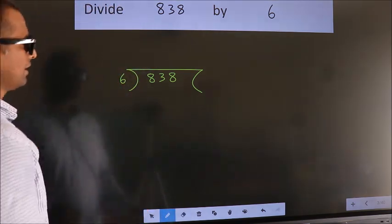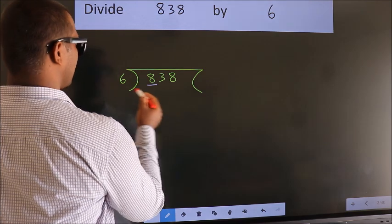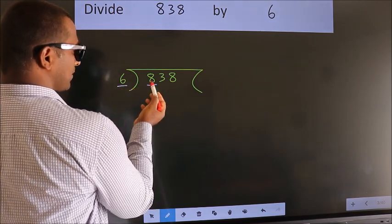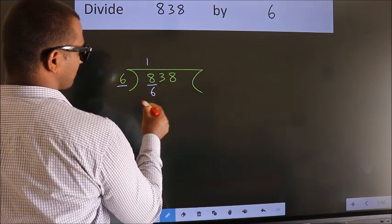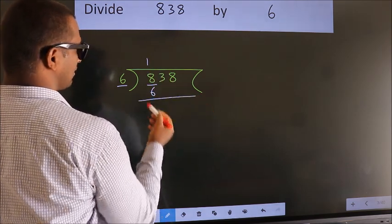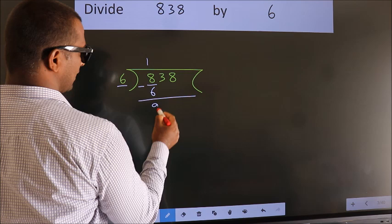Next, here we have 8, here 6. A number close to 8 in 6 table is 6 once 6. Now, we should subtract. We get 2.